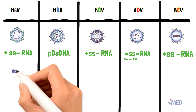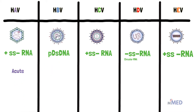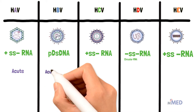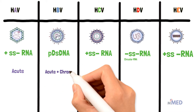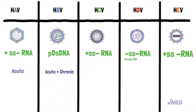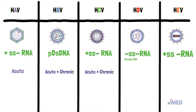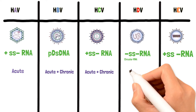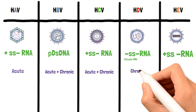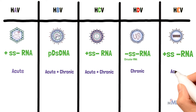Hepatitis A virus causes an acute infection. Hepatitis B virus on the other hand causes an acute infection, but it can actually stay within the liver cell and continue to cause damage for greater than six months, so it's both acute and chronic. Hepatitis C virus can also cause both acute and chronic infections. Hepatitis D virus is mainly a chronic infection. Hepatitis E virus is mainly acute.